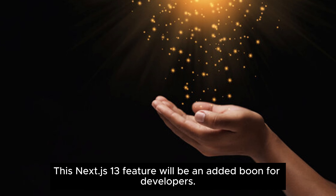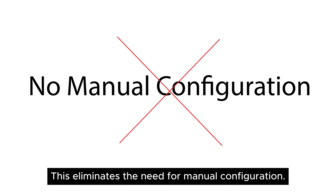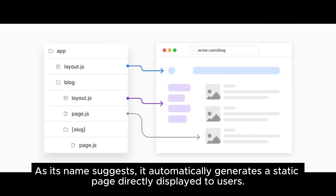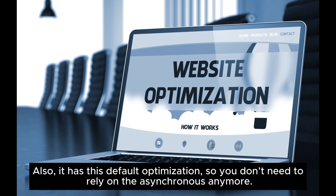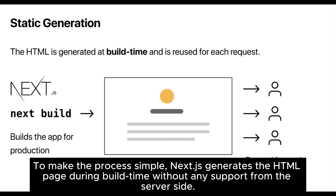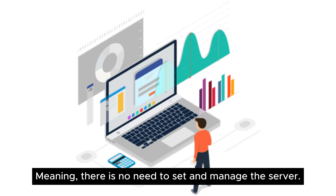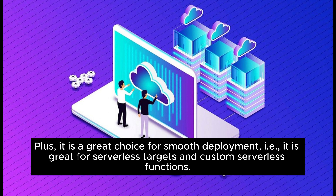Automatic static optimization. This Next.js 13 feature will be an added boon for developers. This eliminates the need for manual configuration — no more dealing with complex server-side rendering. As its name suggests, it automatically generates a static page directly displayed to users. It also has default optimization, so you don't need to rely on the asynchronous anymore. To make the process simple, Next.js generates the HTML page during build time without any support from the server side. This new update aims to simplify app deployment and development, meaning there is no need to set and manage the server. Plus, it is a great choice for smooth deployment — great for serverless targets and custom serverless functions.